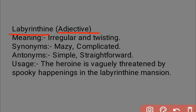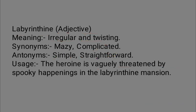Next word is 'labyrinthine,' an adjective meaning irregular and twisting — when things are very complicated and presented in a winding, confusing manner. Synonyms are maze-like, complicated, irregular, and twisting; antonyms are simple and straightforward. Example: 'The heroine is regularly threatened by spooky happenings in the labyrinthine mansion.'